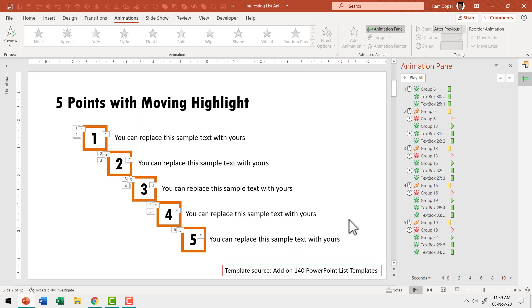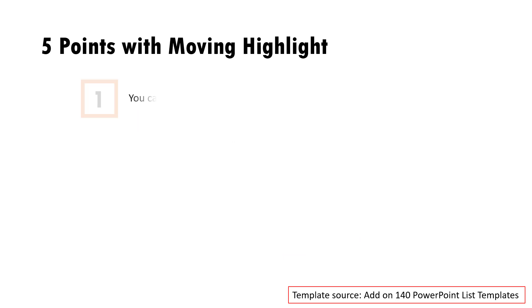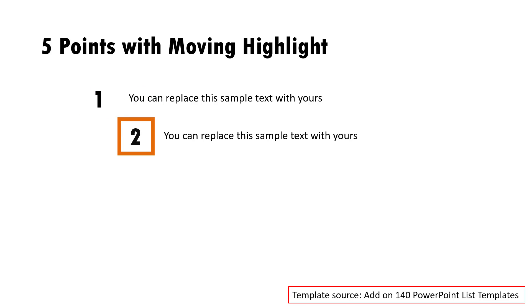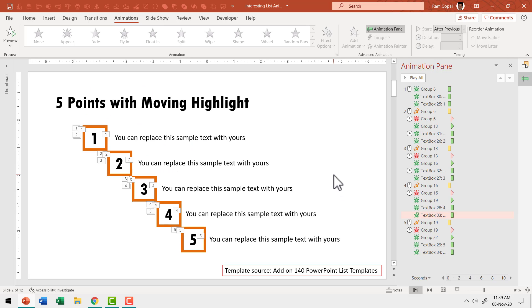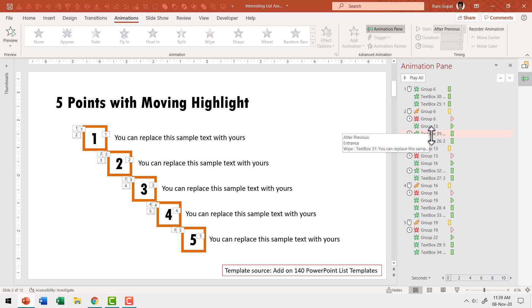If you want the animation to look like the variation I showed earlier — where attention shifts from one number to the next — all you need to do is make sure that after the spin the object disappears. I added a simple disappear animation for the previous object as we move to the next one.